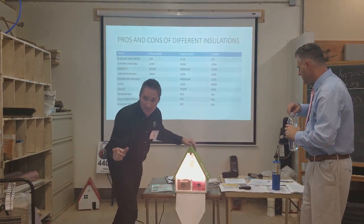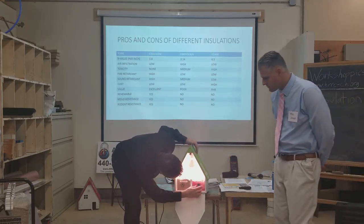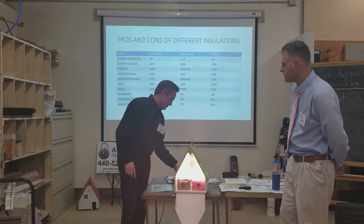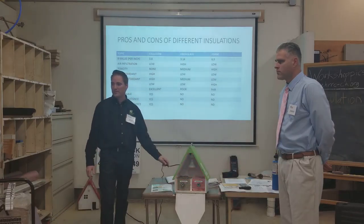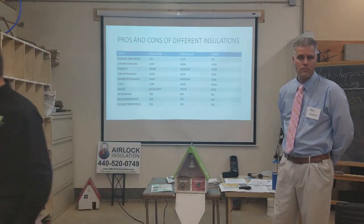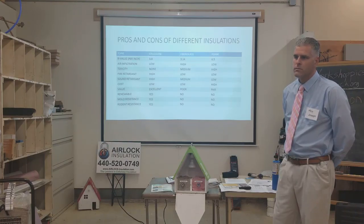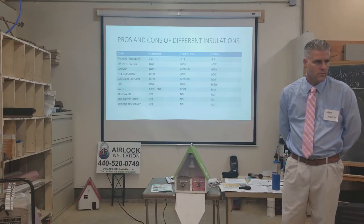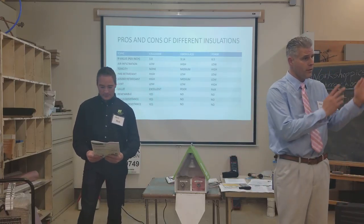I'm going to give you one more set of numbers. The cellulose side is 70.2 degrees. The fiberglass side is 92.2 degrees. That's after maybe five or six minutes. So the heat is going through that fiberglass faster than the cellulose — absolutely. Not only that, but there's also air moving through there as well.